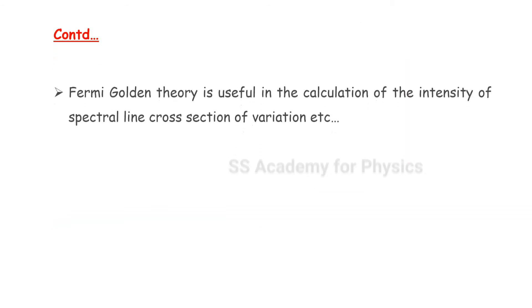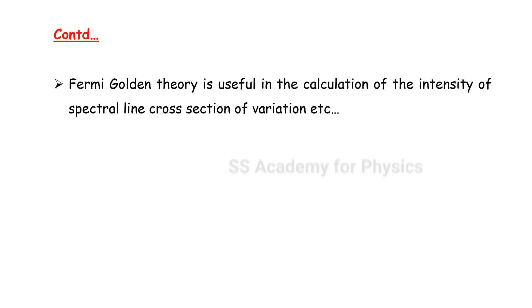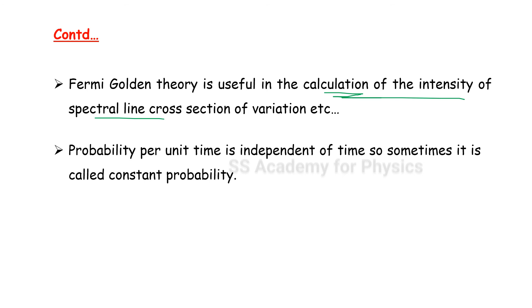Fermi golden theory is useful in calculating the intensity of spectral line cross-section. The probability per unit time is independent of time, so sometimes it is called a constant probability.